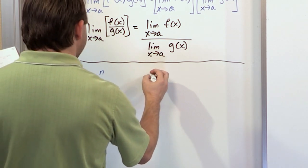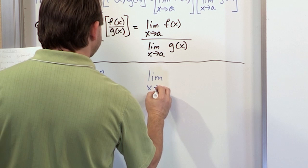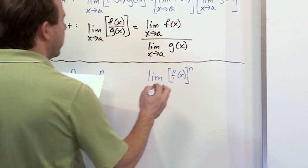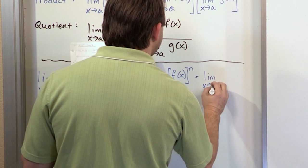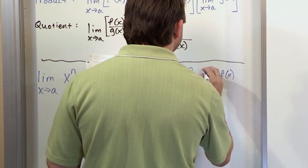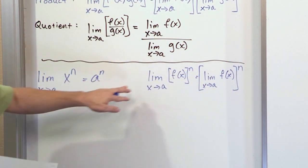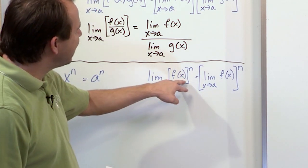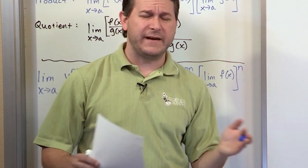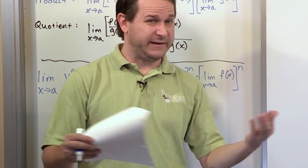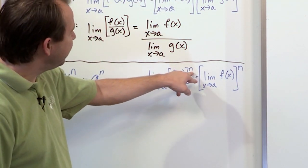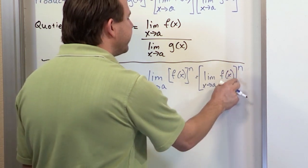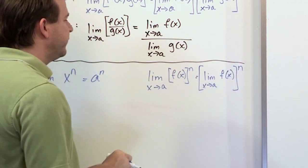Here's another one. What if you have the limit as x approaches a of f of x — any arbitrary function — raised to some power? Then this is going to look very familiar: it's the limit as x approaches a of f of x, and you take the limit first and raise it to the power. So this is kind of an extension of the previous one — that was just a simple exponent of x; this is a lot more general. f of x could be a giant polynomial, f of x could be sine of x, f of x could be tangent of x. If I have any function raised to a power — like sine of x squared and I want to take the limit — what it's basically telling you is evaluate the limit on the inside and then you can square the answer.